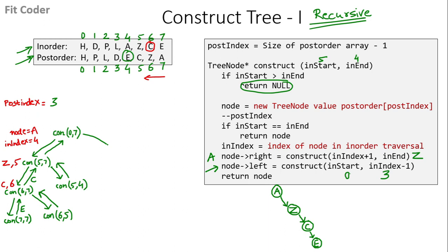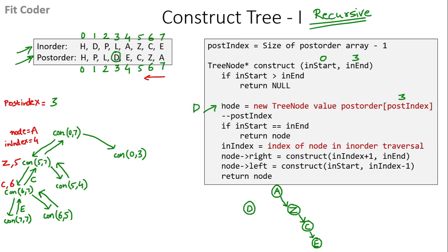Then we call for the left of A. inStart is 0 and inIndex is 4, so the second parameter is 3. From construct(0, 7) we call construct(0, 3). inStart is 0 and inEnd is 3. We create a new tree node with the 3rd index of the postorder array, which is D. We decrement postIndex to 2. We find the index of D in the inorder traversal — it is 1. So for the right of D, we call construct(2, 3).